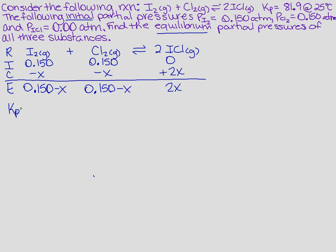We're provided a KP, so that means we know we're going to use KP equals the pressure of the product, the ICl, and that's going to be squared because it's got a two in front, divided by the pressure of I2 times the pressure of Cl2. There are no superscripts because I don't have a coefficient in front of it.